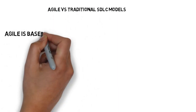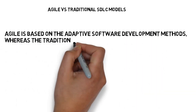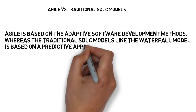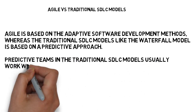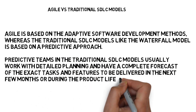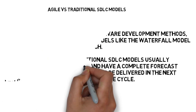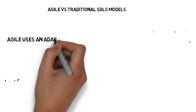Now we are going to discuss the basic difference between Agile and traditional SDLC models. Agile is based on adaptive software development methods, whereas traditional SDLC models like the waterfall model are based on a predictive approach. Teams in traditional SDLC models usually work with detailed planning and have a complete forecast for the exact tasks and features to be delivered in the next few months or during the product life cycle.